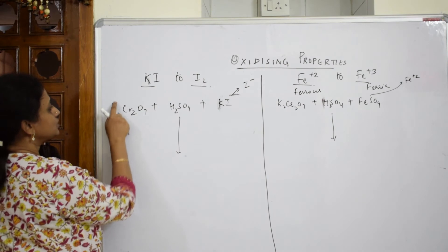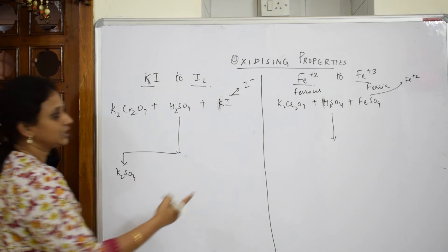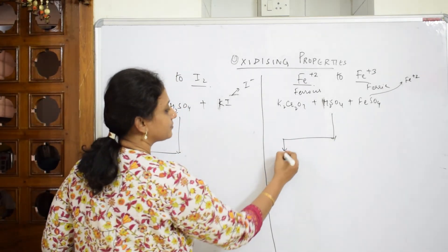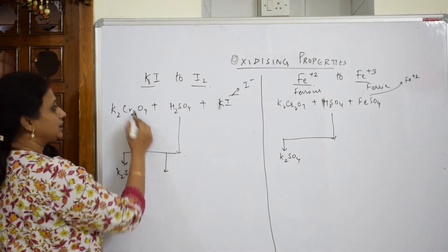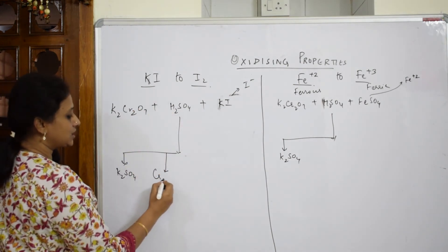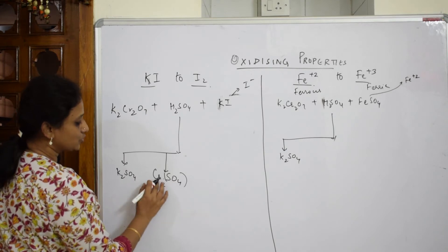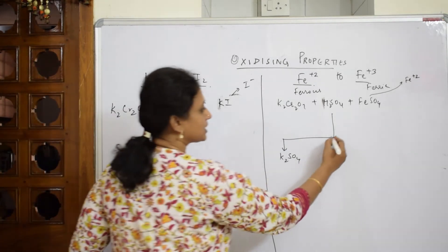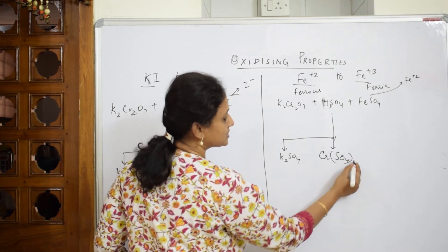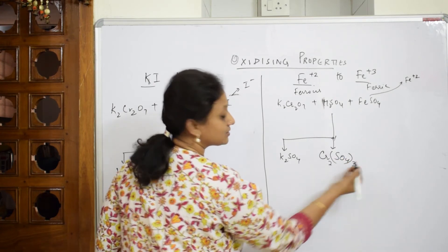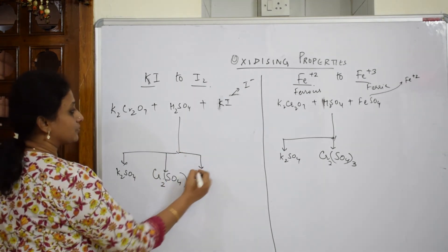Let us write the common thing first. Common thing first, you will get potassium sulfate, K2SO4. Here also you will get K2SO4. Next you will get chromium sulfate: sulfate valency 2, chromium valency 3. Here also same story, Cr2(SO4)3, chromium sulfate valency 2, chromium valency 3, same products.